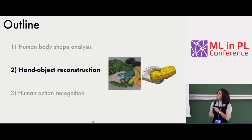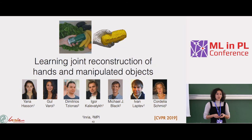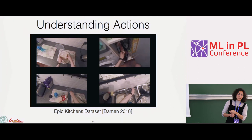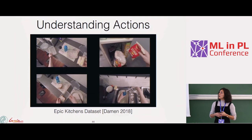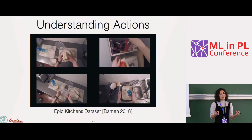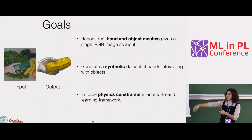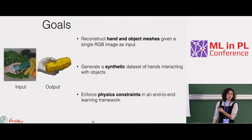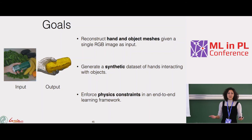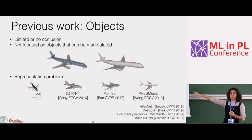Moving to hand-object reconstruction. This is a collaboration between Max Planck and INRIA, presented at CVPR this year. The final goal is to understand human actions, and hands play a very important role in understanding interactions with objects. The first step is reconstructing hands and objects together: given an input image, reconstruct the full mesh of both the hand and the object. We use yet another synthetic dataset for training since no training data exists for this, and integrate physics-aware losses into the neural network architecture.